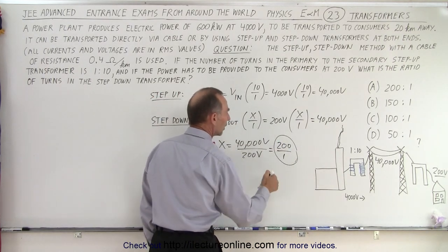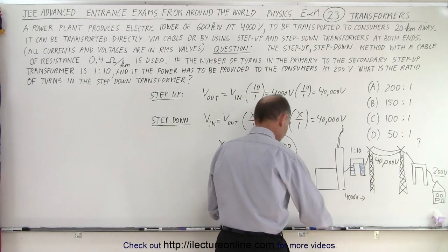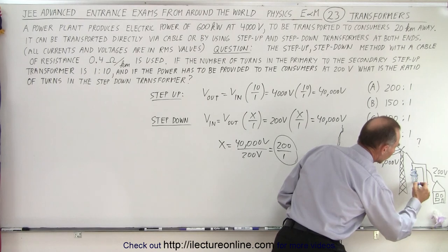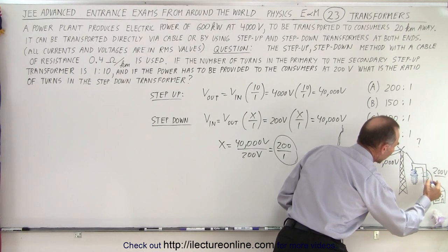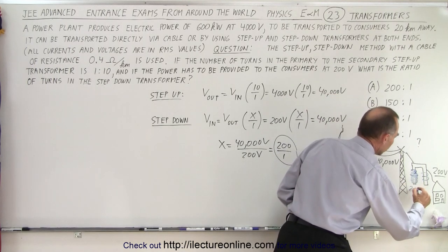So the ratio is 200 to 1 step-down. 200 in the primary. So what that looks like is you'll have 200 times as many turns in the primary versus one.